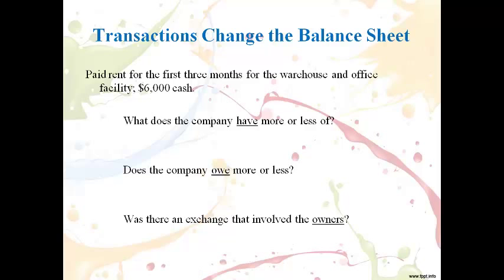Let's talk through another example. The company paid $6,000 for rent for the first three months for the warehouse and office facility. This transaction is an exchange of one asset for another — cash will decrease and prepaid rent will increase. There was no change to what is owed, and there was no transaction directly with the owners. Cash will be lower and prepaid rent will be higher on the balance sheet.